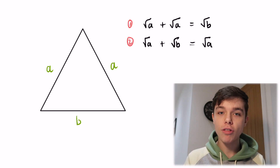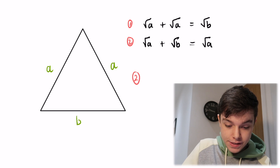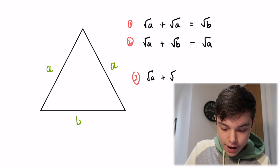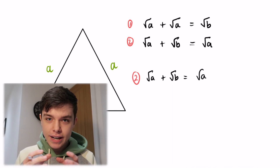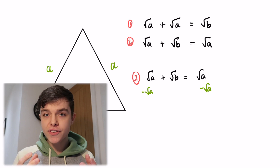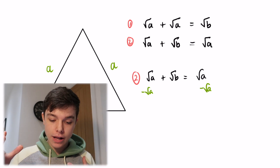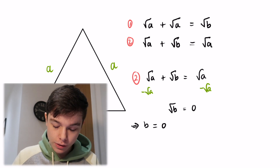I'm going to call those Equation 1 and Equation 2. Let's first look at Equation 2: the square root of A plus the square root of B equals the square root of A. Straight away I can take away the square root of A from both sides — they cancel out — leaving us with the square root of B equals zero. That means B equals zero, since the square root of zero is zero.